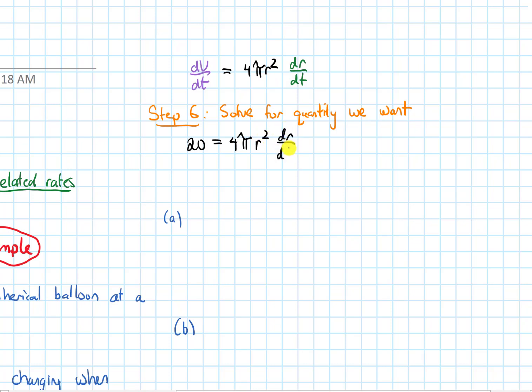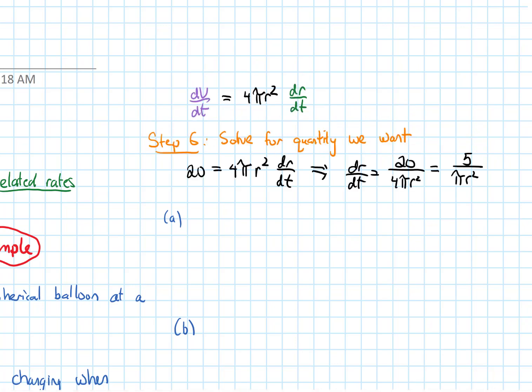This is going to be equal to 4π r squared, and I'll have to do it for two different r values. So for right now, let me just keep it as r squared times dr/dt. If I isolate dr/dt, I'll get 20 divided by 4π r squared. I could cancel a 4 on the top and the bottom and be left with 5 over π r squared.